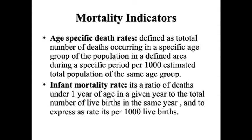Age-specific death rates are defined as the total number of deaths occurring in a specific age group of the population in a defined area during a specific period, per 1000 estimated total population of the same age group. For example, to find how many deaths are occurring between 15 and 24 years, we use age-specific death rates. Infant mortality rate is the ratio of deaths under one year of age in a given year to the total number of live births.